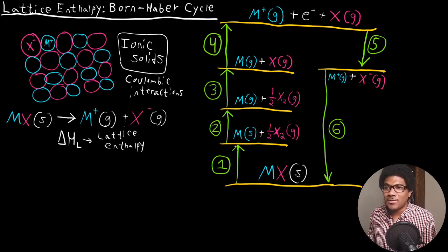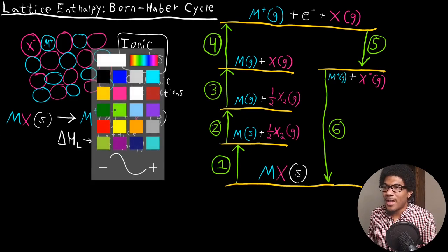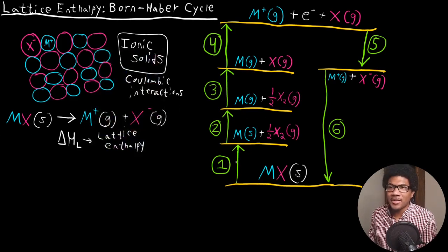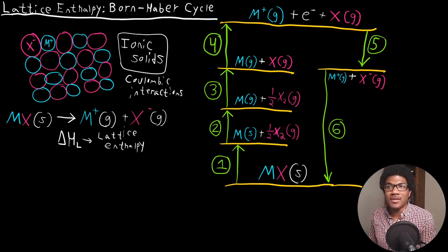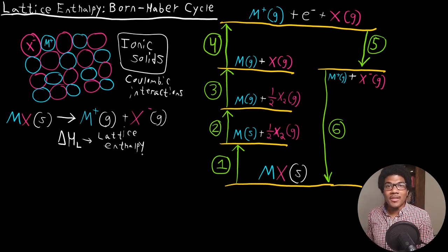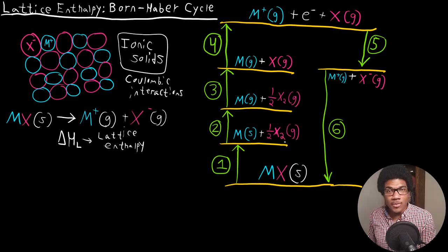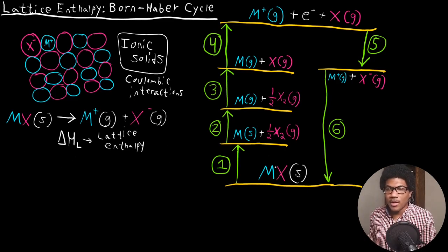That cycle is called the Born-Haber cycle. I've drawn out a diagram on the right-hand side here that includes six steps. Without even paying too close attention to each step, you can see that it's cyclical — it goes through these six steps that begin and end at the solid. Keep in mind, as we saw in the last video, if we begin and end with the exact same thing, when you add up all of the enthalpy changes here, they should equal zero. We're going to make use of that to solve for the lattice enthalpy. Let's go through this step by step.